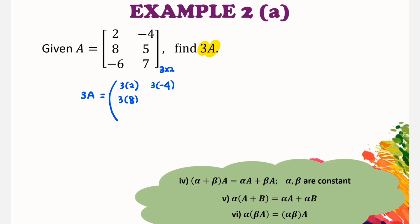So matrix 3A is obtained by multiplying each of elements of the matrix A by 3. So I'm going to write this step for this first example only. So the answer for 3A will be 6, negative 12, 24, 15, negative 18 and 21.